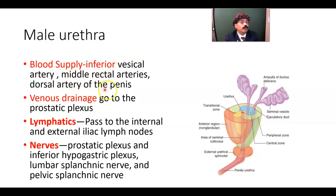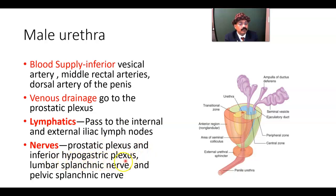The blood supply of the urethra comes from the inferior vesical artery, middle rectal artery, and dorsal artery of the penis. Venous drainage goes to the prostatic plexus. Lymphatic drainage passes to the internal and external iliac lymph nodes. Nerve supply involves multiple nerves including the prostatic plexus, inferior hypogastric plexus, and autonomic nerves — both sympathetic and parasympathetic.